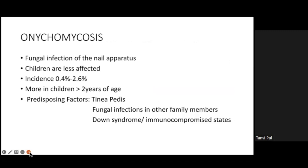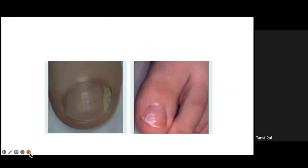Moving on to nail infections, the most common is onychomycosis — fungal infection of the nail apparatus. Children are less affected, with an incidence of around 0.4 to 2.6 percent, more common in children over two years of age. Predisposing factors include associated tinea of the feet, fungal infections in other family members, immunocompromised states, and Down syndrome. The most common onychomycosis in children is candidal onychomycosis.